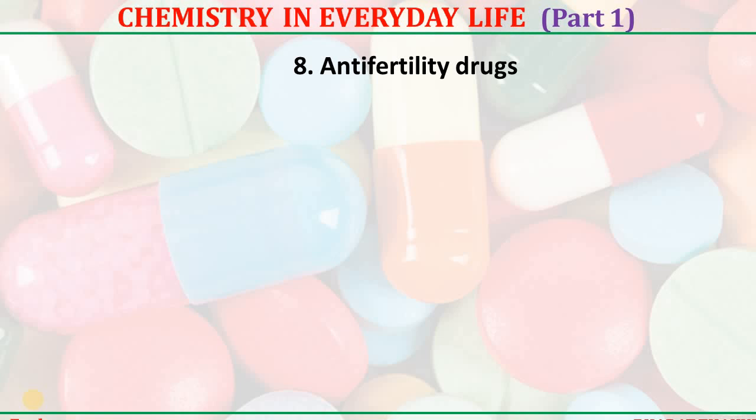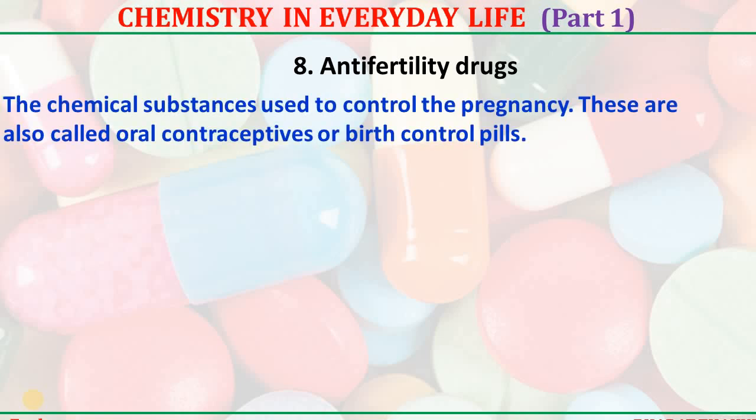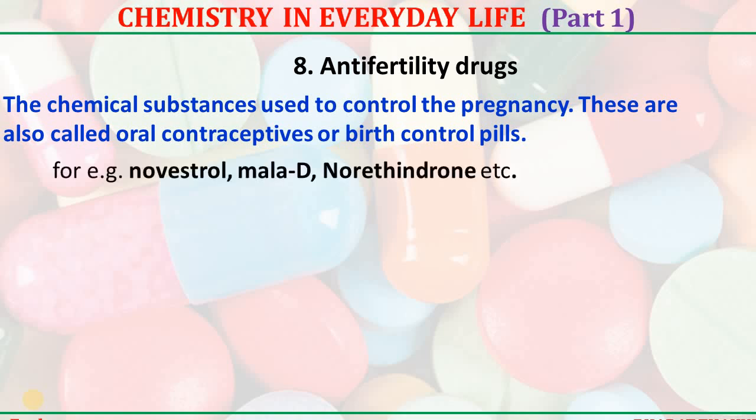Anticontraceptive drugs — the chemical substances used to control pregnancy. They are also called oral contraceptives or birth control pills. For example, novestrol, mifepristone, etc.